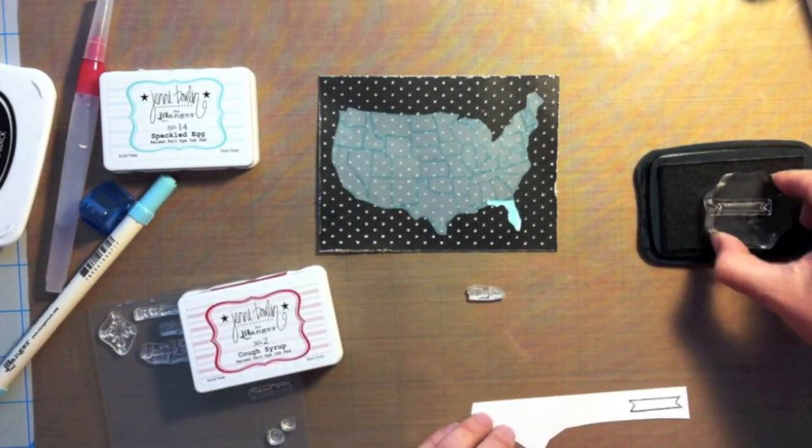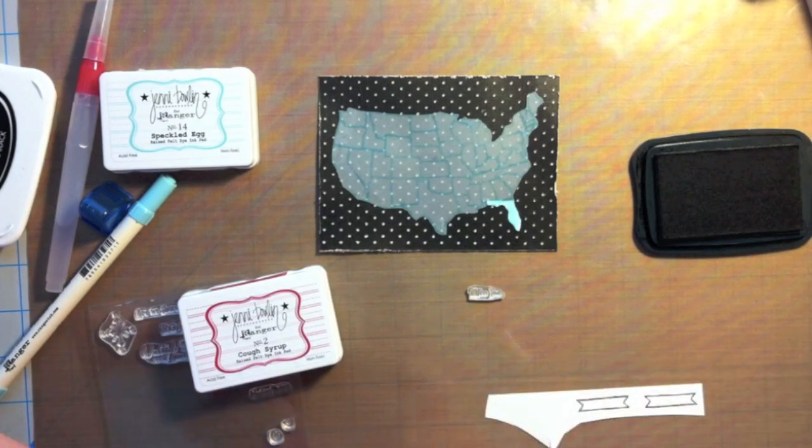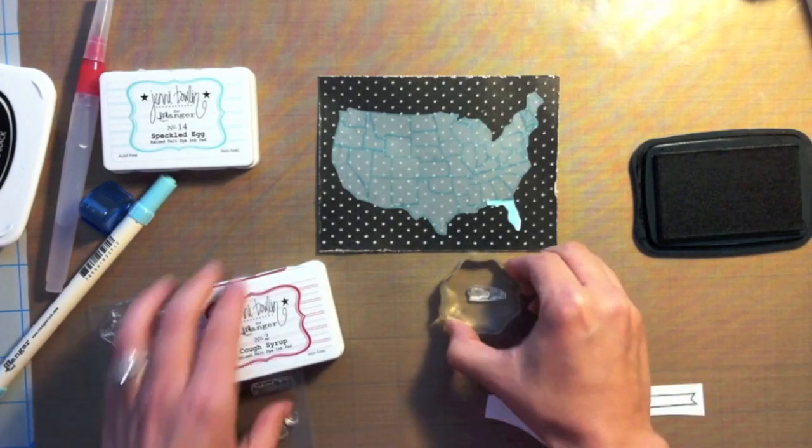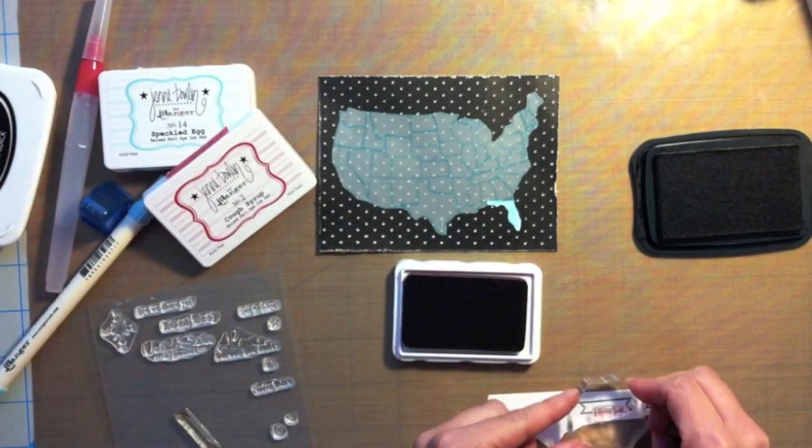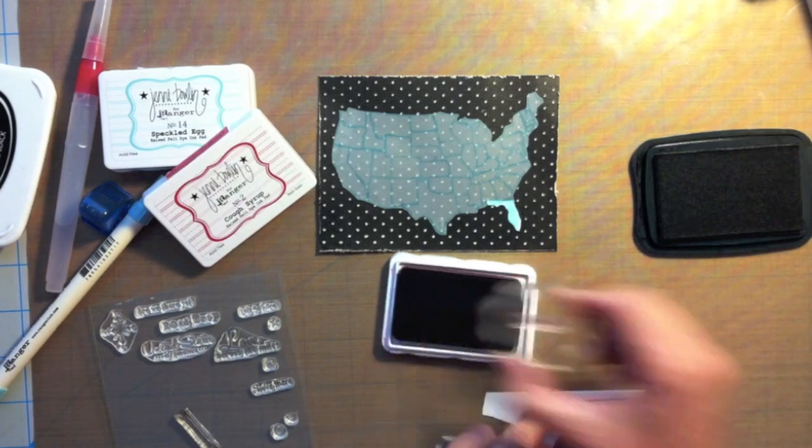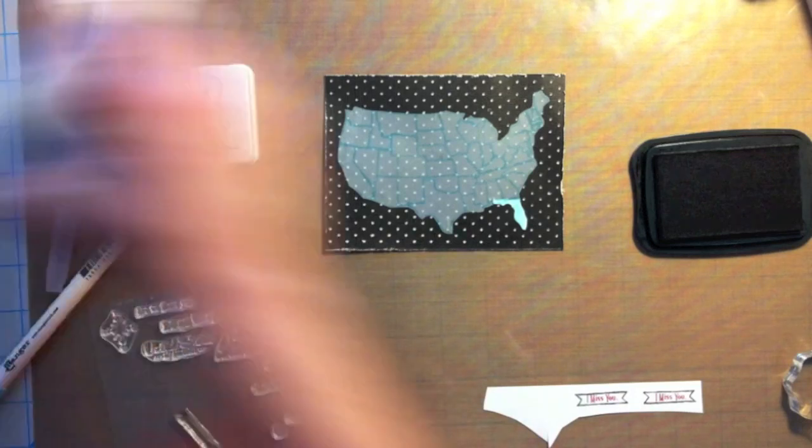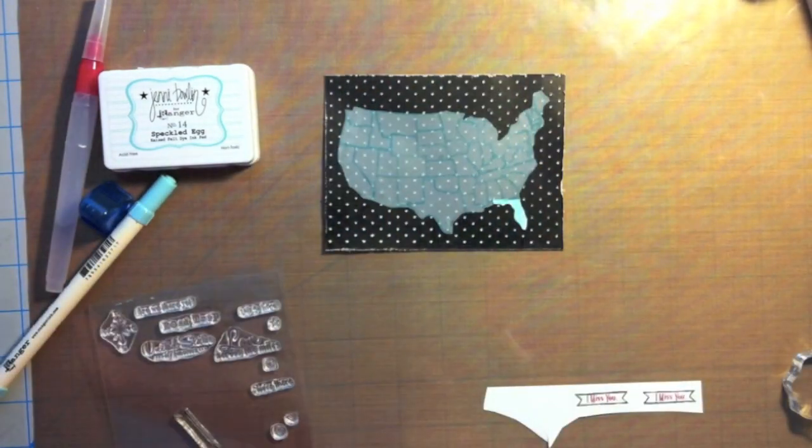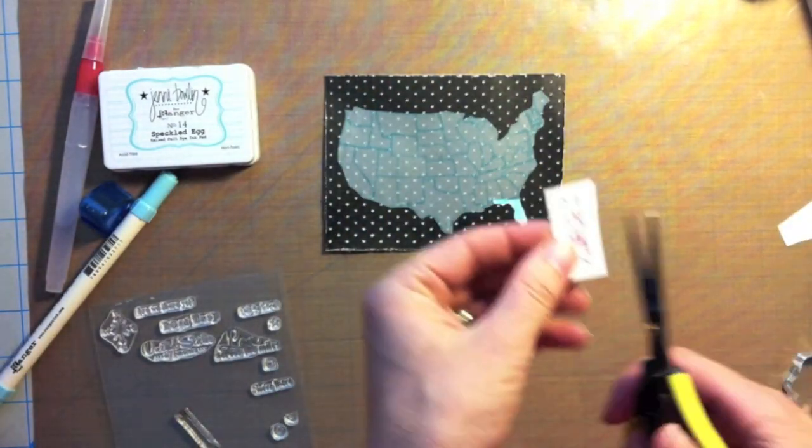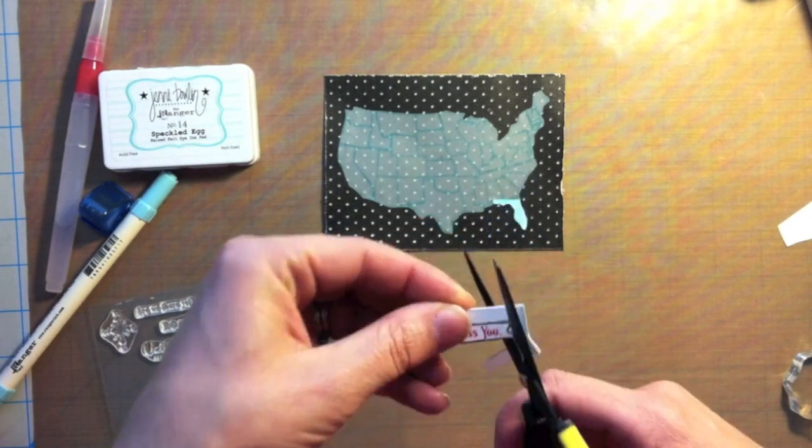And I'm going to take some Jenni Bowlin Cough Syrup ink. I just wanted another splash of color and I'm stamping 'miss you' right in the middle. I'm making this card with my husband in mind because he's in the military so he definitely will be missed. So I'm making this with him in mind.